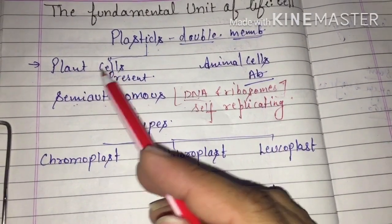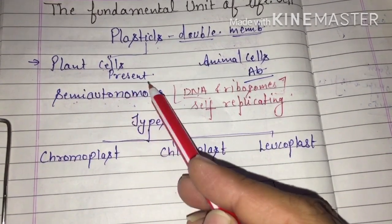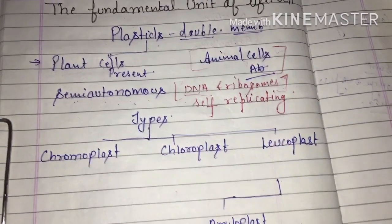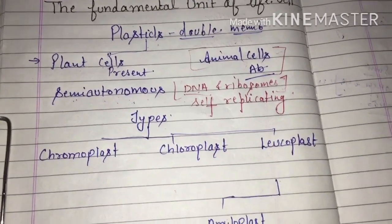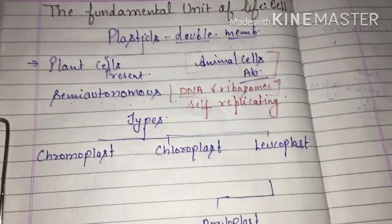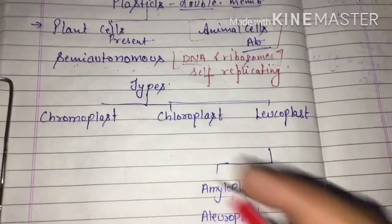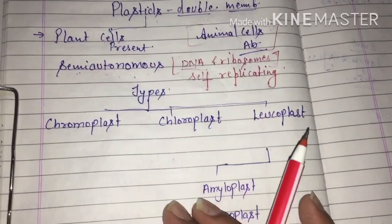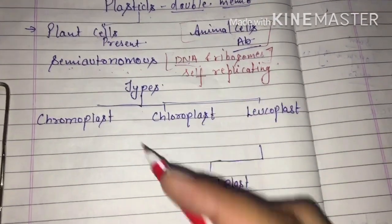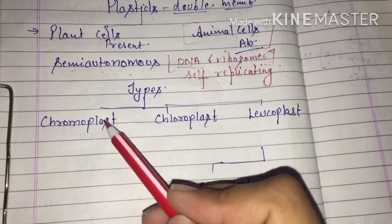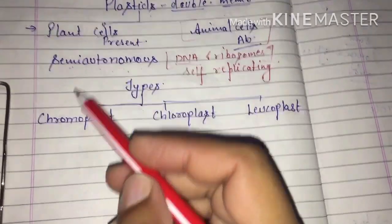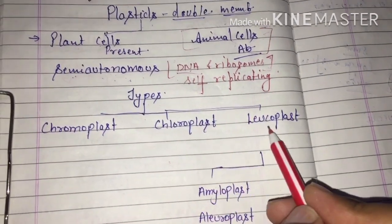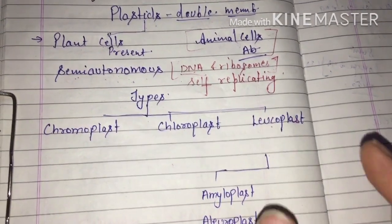Plastids are found in most plant cells and are absent in animal cells. If we talk about the types of plastids, we are having three basic types: first one is the chromoplast, second one is the chloroplast, and the third one is the leucoplast.